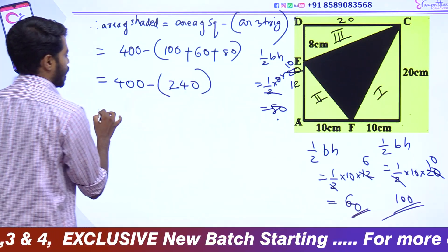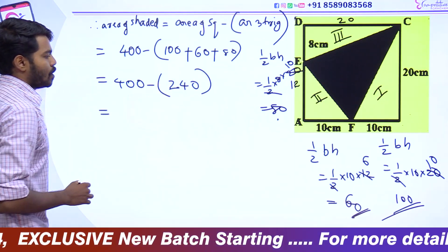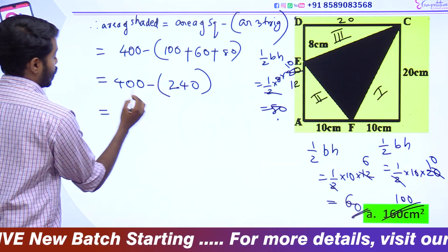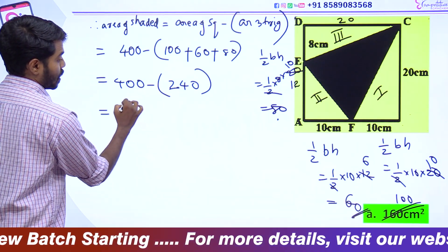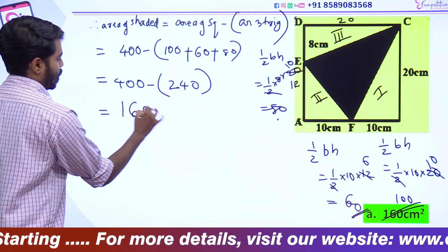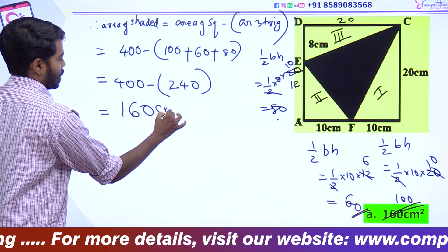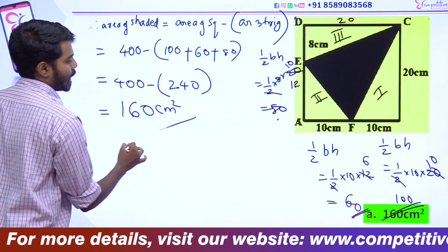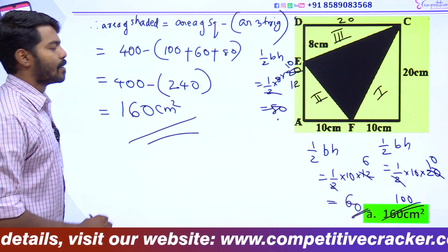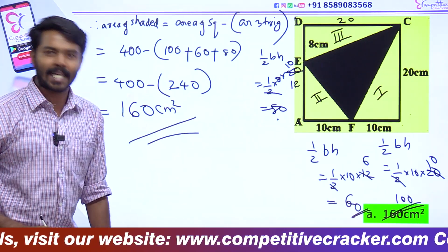Clear. Yes — 400 minus 240 equals 160. That is 160 cm². The option is 160 cm².